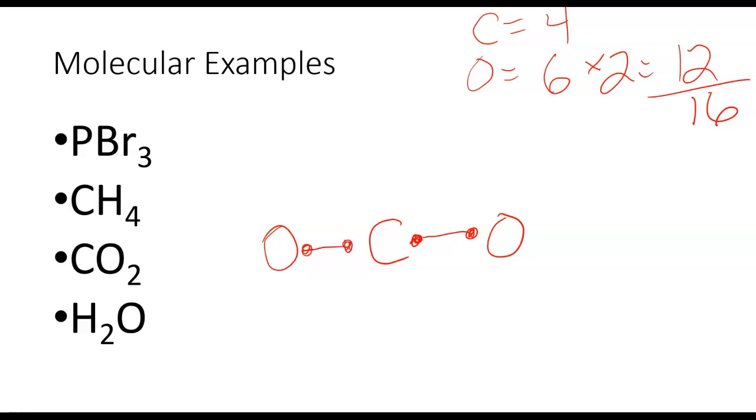Carbon here has 1, 2, 3, 4, 5, 6, 7, 8. Oxygen 2, 3, 4, 5, 6, 7, 8. Fill all the octets, and then always double check, do I have 16, exactly 16 electrons, no more, no less.